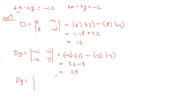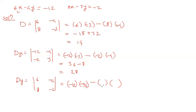Now we find Dy. Instead of y coefficients, we write the constants minus 12 and minus 2, with x coefficients 6 and 8 remaining as they are. Cross multiplying: 6 times minus 2 is minus 12, and minus minus plus gives 8 times 12 which is 96. So minus 12 plus 96 equals 84.